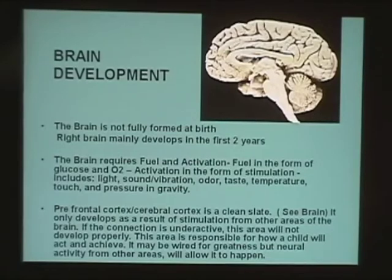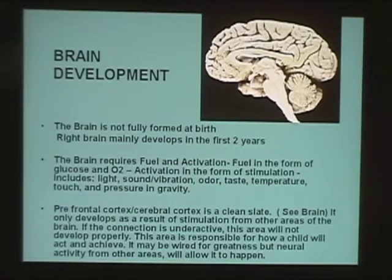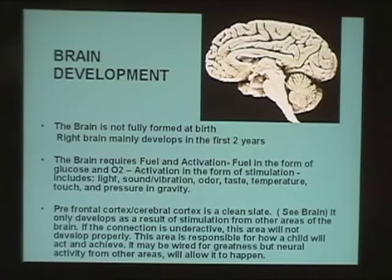Brain development is another very important area. The brain is not fully formed at birth. Neonatally and during the first two years of life, the right side of the brain is the one developing most. Neurological disorders like autism, ADHD, and autistic spectrum disorders are thought to develop sometime neonatally or in the first two years of life. Something causes the brain to kind of suspend its development, and the right brain becomes weak, producing the characteristics we observe.